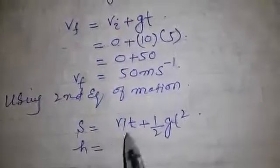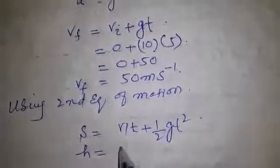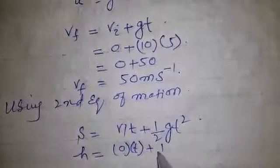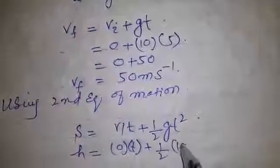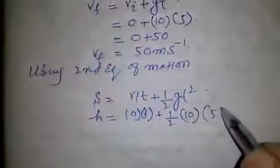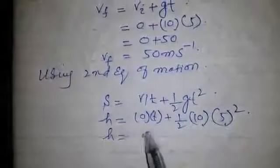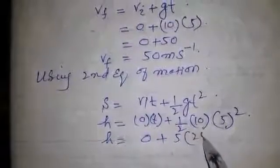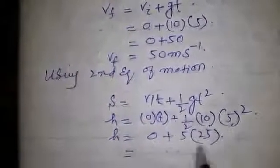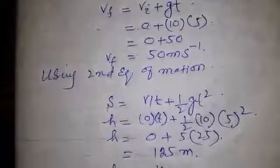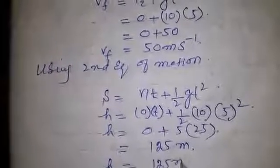Height h equals 0 times t plus one-half times 10 times 5 squared. So h equals 0 plus 5 times 25, which equals 125 meters. Therefore, height h equals 125 meters.